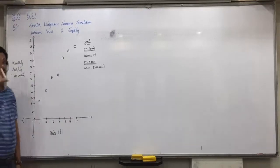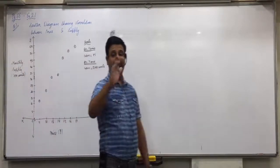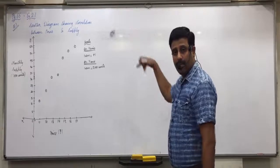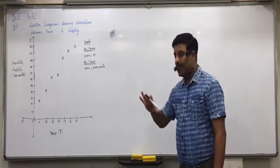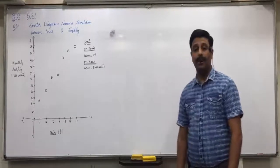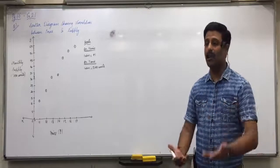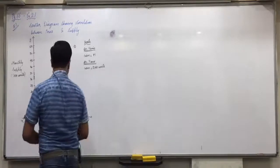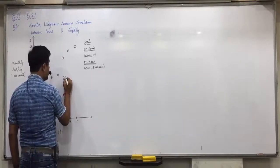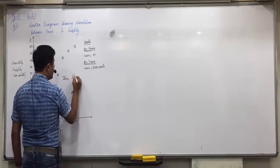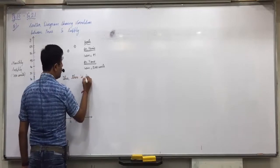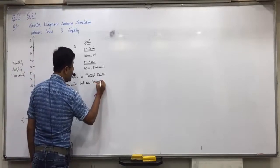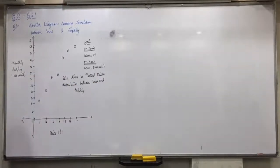We studied five types of scatter diagrams: perfect positive, perfect negative, partial positive, partial negative, and no linear correlation. Looking at this diagram, it shows partial positive correlation. Below the diagram write: 'Thus there is partial positive correlation between price and supply.'